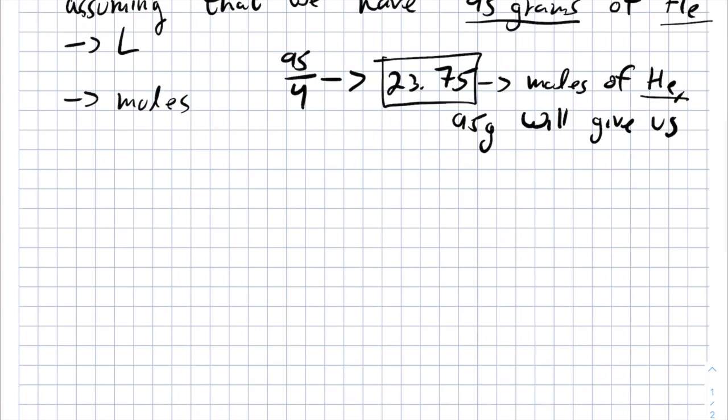So now we have 23.75 moles of helium. We can multiply it by 22.4. Why are we multiplying by 22.4? Because we know if one mole equals 22.4 liters, 23.75 times the number one mole equals will give us the number of liters 23.75 moles of helium will yield. And we will get 532 liters of helium gas.